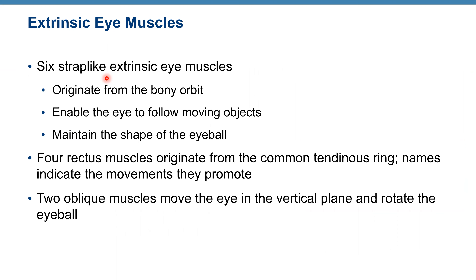Extrinsic eye muscles allow you to move your eyeballs so you don't constantly have to rotate your head to look somewhere. Those muscles are skeletal muscles under voluntary control. We have six extrinsic eye muscles — they are strap-like, originate from the bony orbit, enable the eye to follow moving objects, and also maintain the shape of the eyeball.